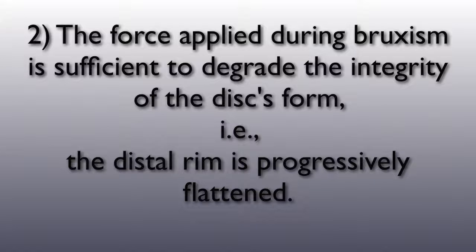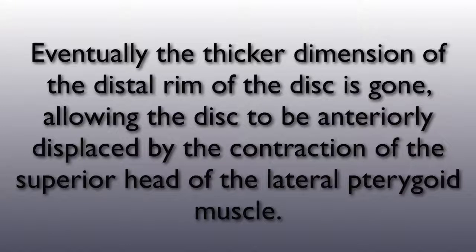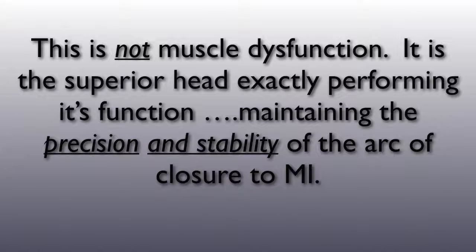The second risk factor is that the force applied during bruxism is sufficient to degrade the integrity of the disc's form — in other words, the distal rim is progressively flattened. It is progressive because the superior head must maintain the condylar detrusion space as required by the occlusion of maximum intercuspation as the disc is continuously deformed. Eventually, the thicker dimension of the distal rim of the disc is gone, allowing the disc to be anteriorly displaced by the contraction of the superior head. This is not muscle dysfunction; it is the superior head doing exactly what it is designed to do, which is to maintain the precision and stability of the arc of closure to MI.